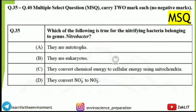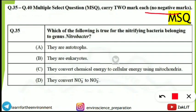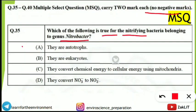The next question is an MSQ carrying two marks with no negative marks. The question asks: which of the following is true for nitrifying bacteria belonging to the genus Nitrobacter? Four options are given. The correct option is A — they are autotrophs. They are not eukaryotes; they are prokaryotic organisms without a true nucleus, and therefore do not have mitochondria.